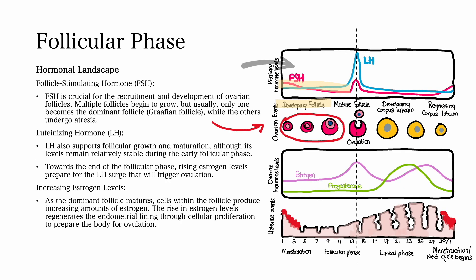Follicle-stimulating hormone is crucial for the recruitment and development of ovarian follicles. Multiple follicles begin to grow, but usually only one becomes the dominant follicle, called the Graafian follicle. The other follicles undergo atresia.